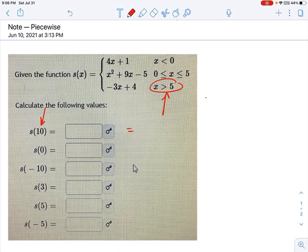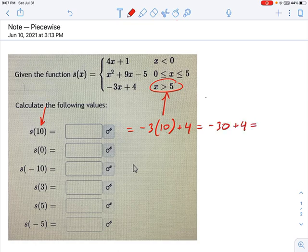So you say negative 3 times x is 10 plus 4 equals negative 30 plus 4 equals negative 26. That really is all there is to this. You can do most of these things in your head.